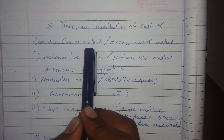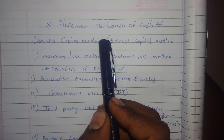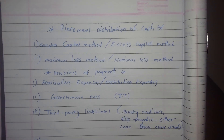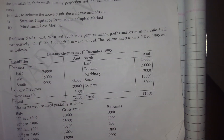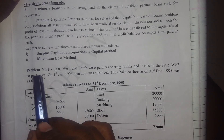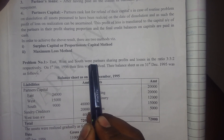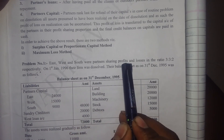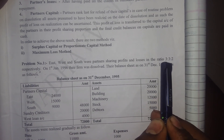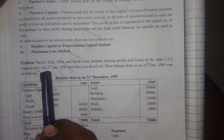In this video, I will tell you about the surplus capital method and how to solve the Piecemeal distribution problem. I have a problem for you. Problem number one: East, West and South were partners sharing profits and losses in the ratio 3:3:2 respectively.